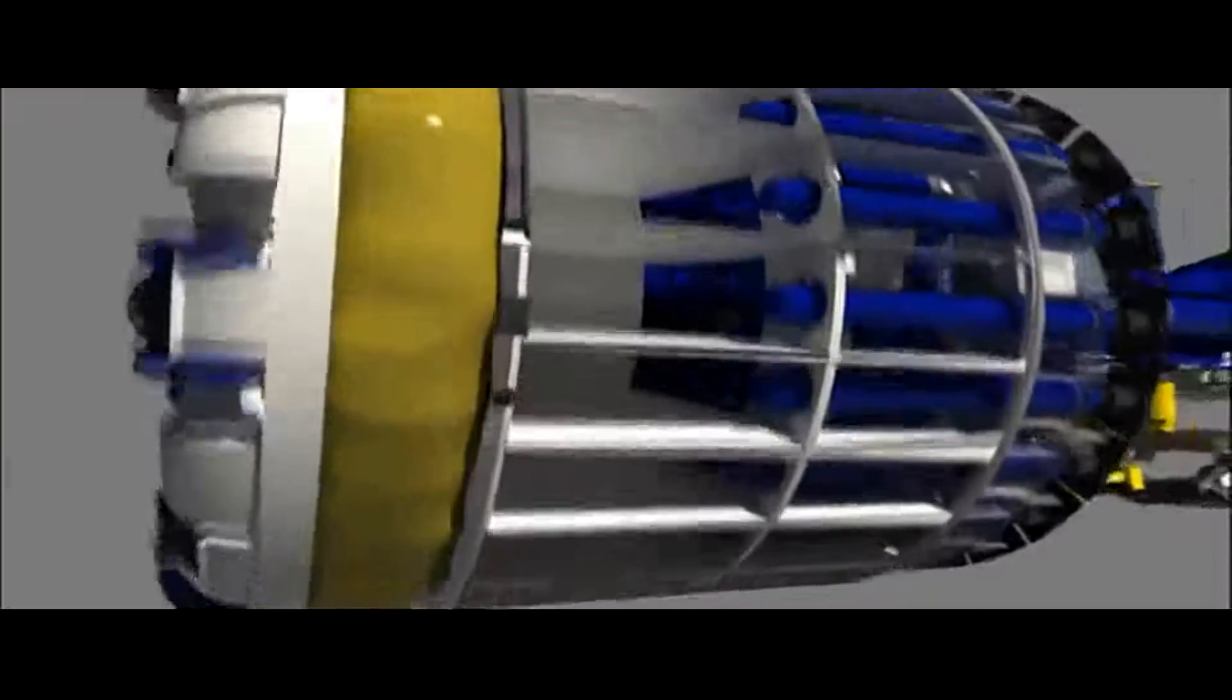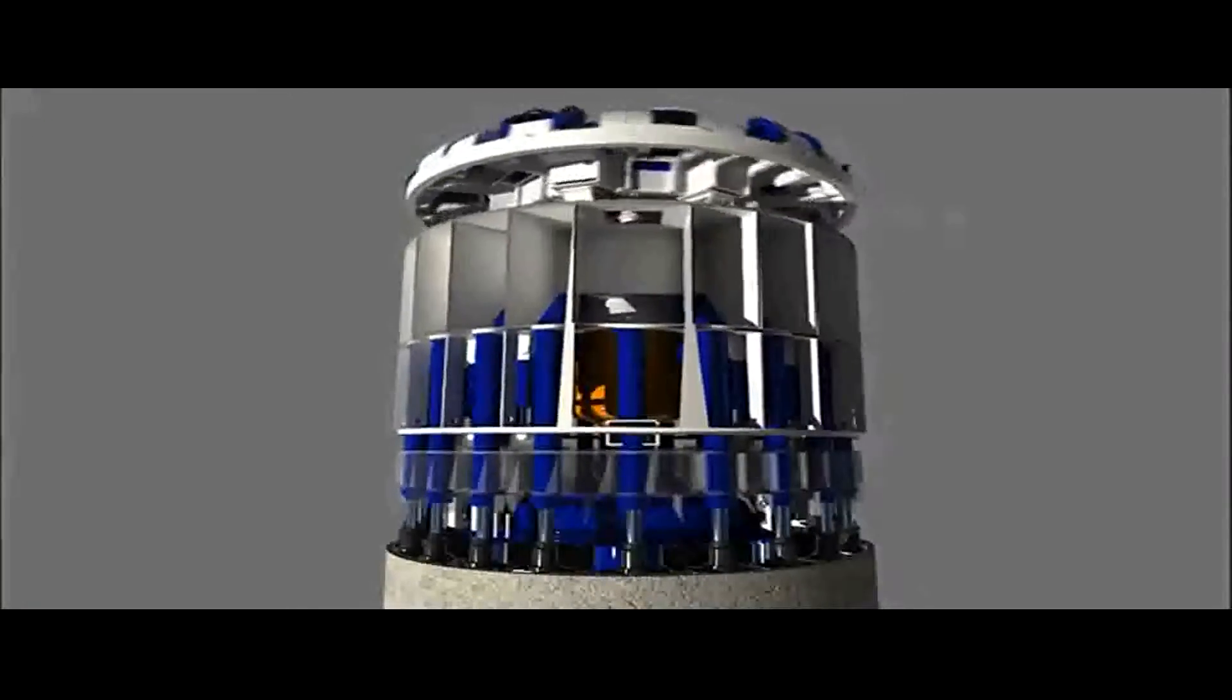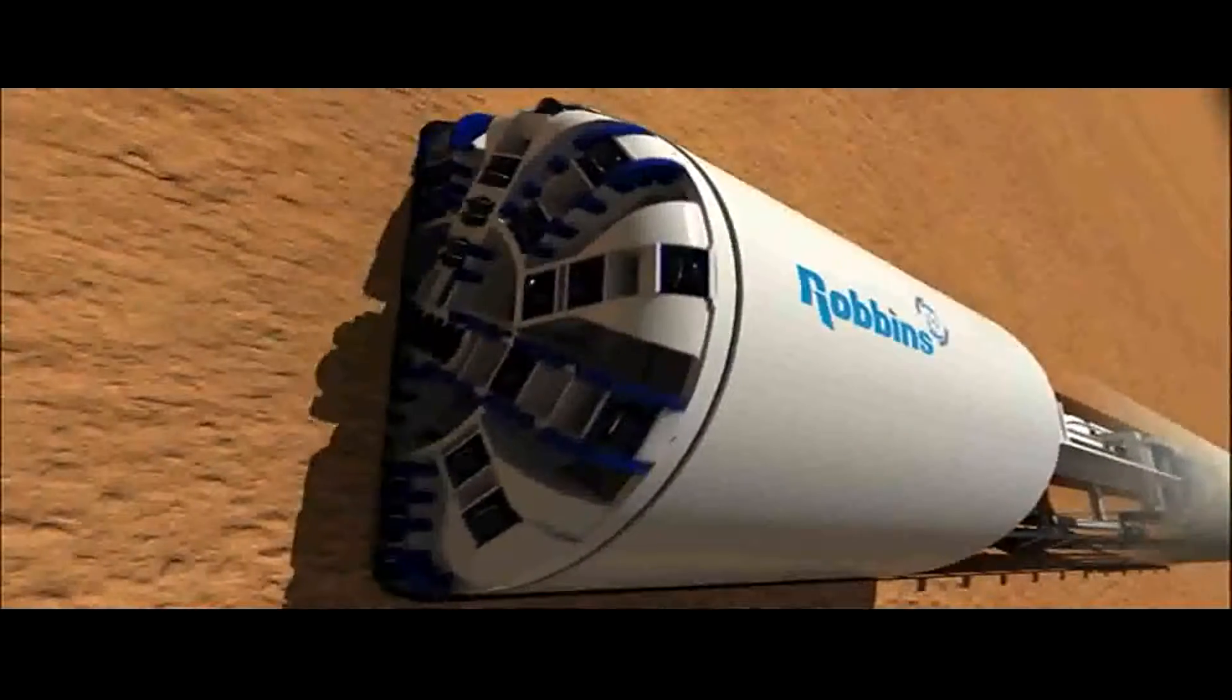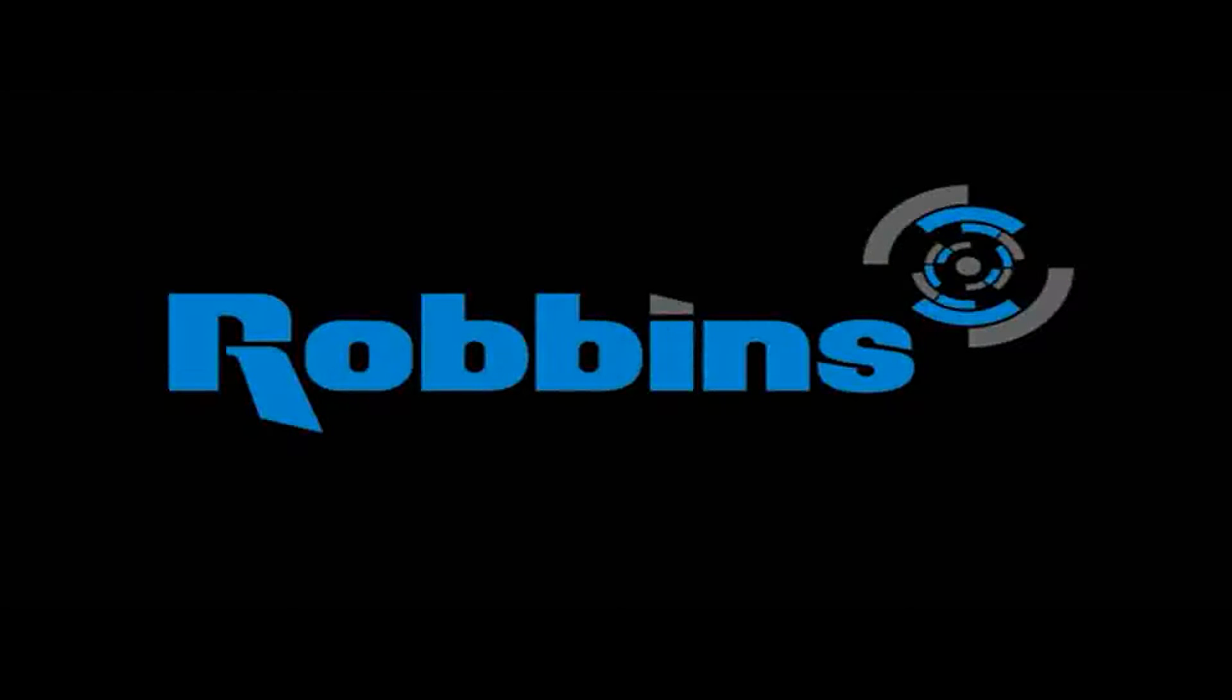Robbins' earth pressure balance machines maintain the highest quality standards in the industry, resulting in rugged machines that create the longest tunnels in any type of soft or mixed ground. Robbins, the most trusted name in tunneling.